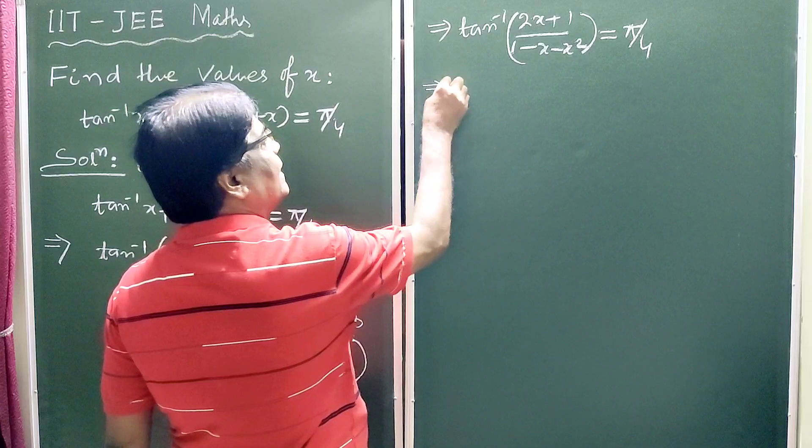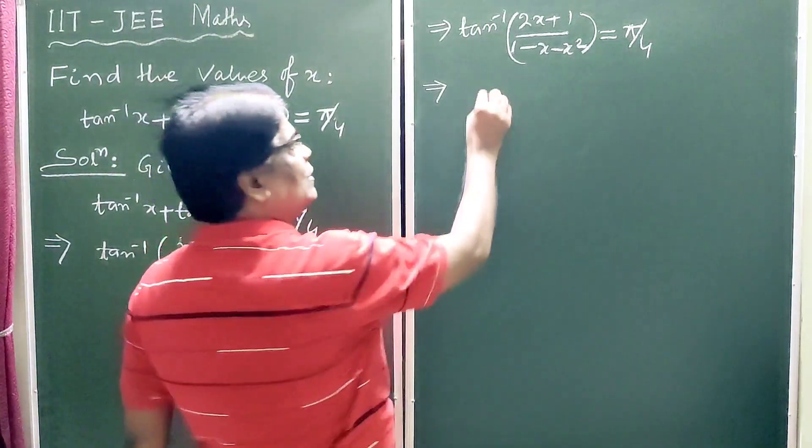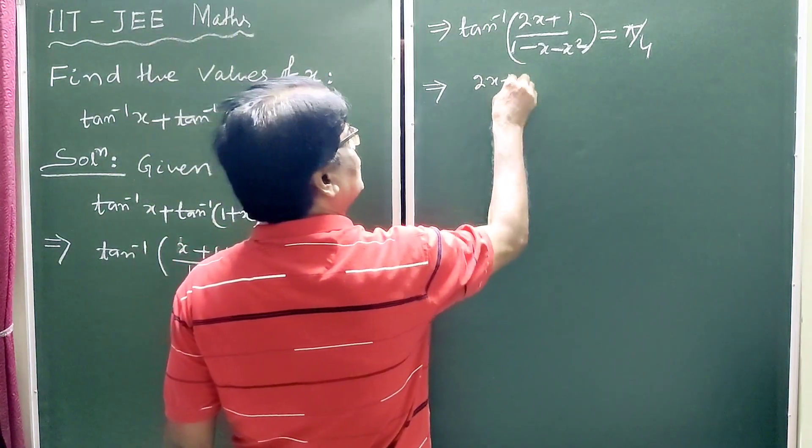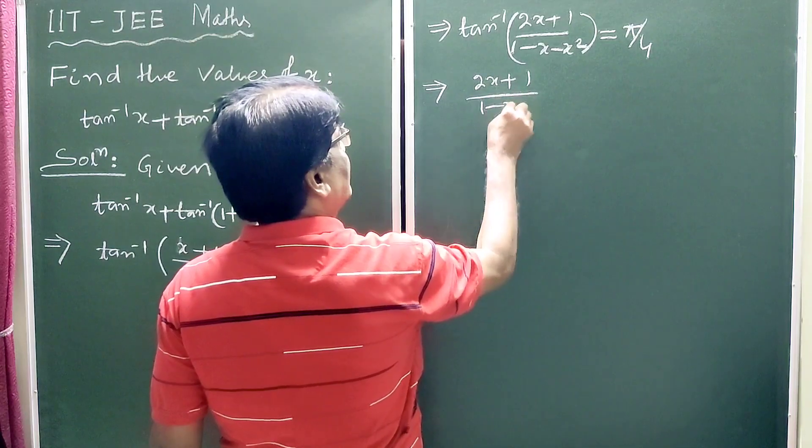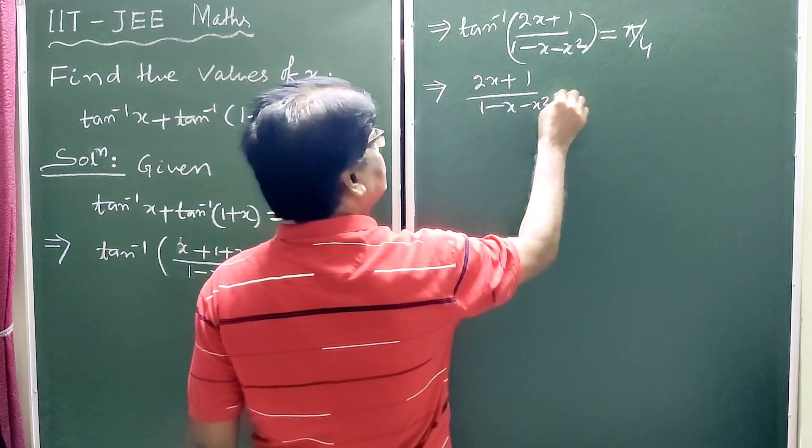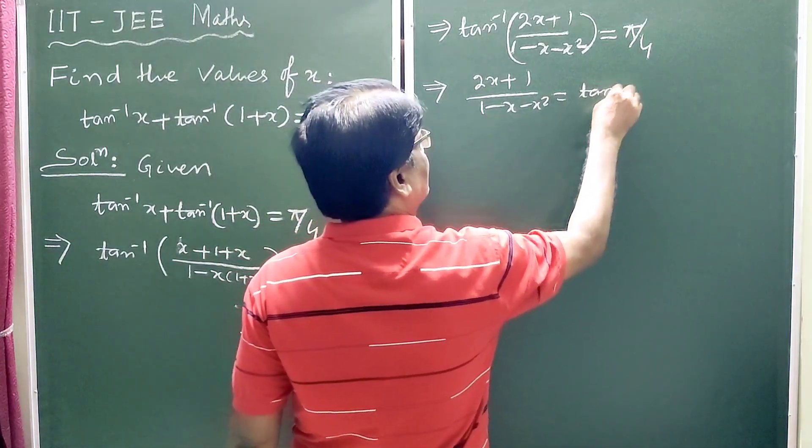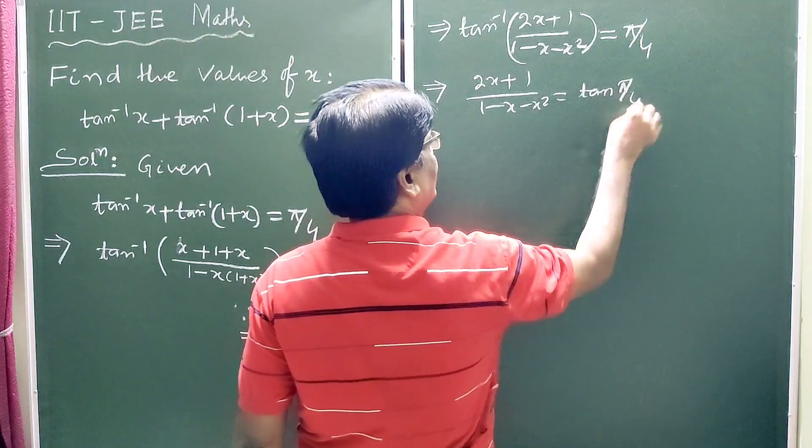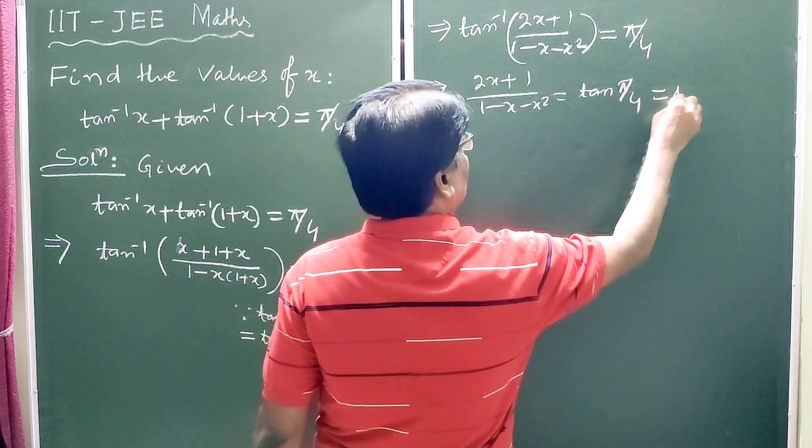This again implies 2x plus 1 by 1 minus x minus x square is equal to tan of pi by 4 which is equal to 1.